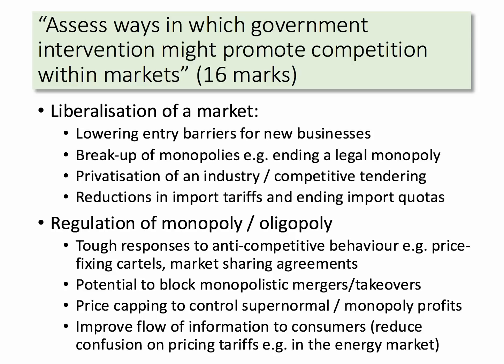One main approach is to liberalise a market. You do that by bringing down some of the entry barriers for new businesses, perhaps breaking up existing monopolies, ending for example a legal monopoly. The Royal Mail lost its statutory monopoly in delivering letters some years ago — and of course that's now a highly competitive sector. You might introduce some privatisation, transfer the ownership of a business, introduce competitive tendering for example for some public services. And crucially you can open up a market by cutting import tariffs and by ending forms of non-tariff barriers such as a quota. So liberalisation is one strategy.